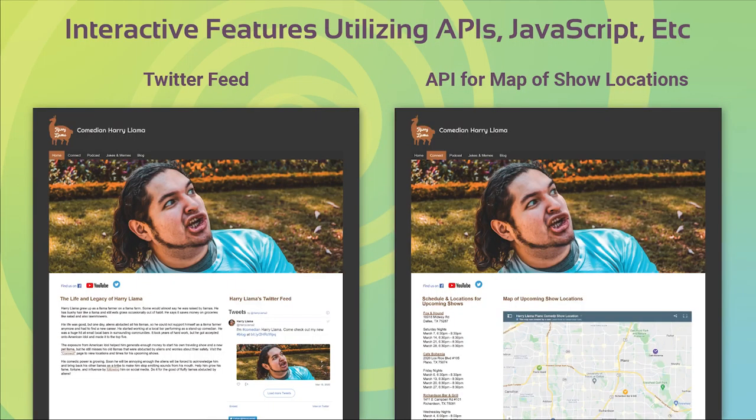There are several interactive features utilizing APIs, JavaScript, widgets, etc. added to Harry Lama's website. One of them displayed on the left image is the Twitter feed widget, which you can see on the right side of his home page so people can see his tweets. On the right image there is an API for a map to display where his comedy shows are located so his fans and customers can find them more easily.